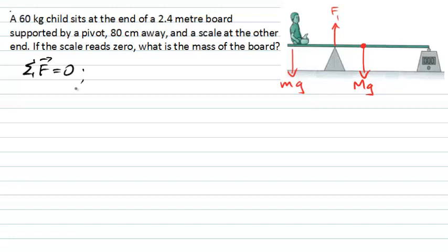If we choose up to be positive, we could see that we'd have F1 minus small mg, that's the weight of the child, minus large Mg, that's the weight of the board itself, must add to zero.